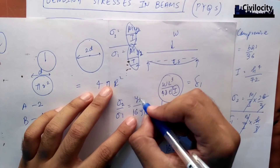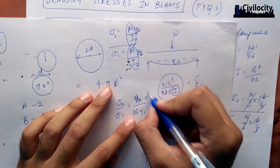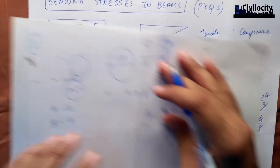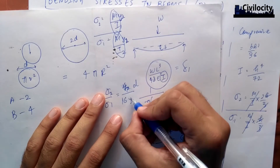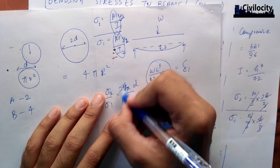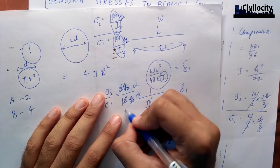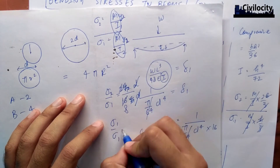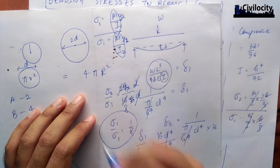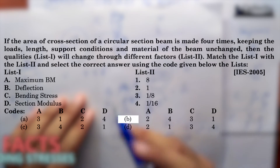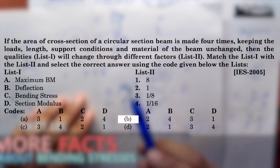For Y2, the distance from the neutral axis is 2D divided by 2, which equals D. For Y1, the distance is D/2. So the ratio sigma2/sigma1 includes I1/I2 = 1/16, multiplied by Y2/Y1 = D / (D/2) = 2. Therefore, sigma2/sigma1 = 1/16 × 2 = 1/8. The bending stress ratio is 1/8, which corresponds to option 3.